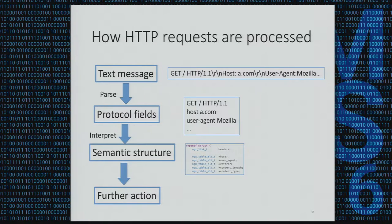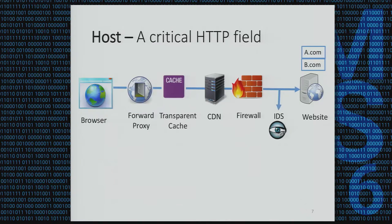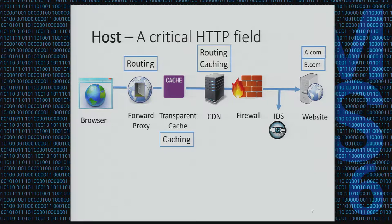Processing HTTP requests can be divided into three steps. First, a textual message is parsed into valid protocol fields. Then these protocol fields are interpreted into semantic structures. And this semantic structure is used for further actions. One of the most important HTTP fields is the host header. In a forward proxy, it's used for routing to decide the forwarding destination. In a transparent cache, it's used as a caching key to isolate different web caches. In CDN, it's used for routing and caching. In a firewall, it's used for identifying requests for different websites. In a website, it's used for locating resources in a co-hosting environment.